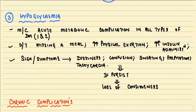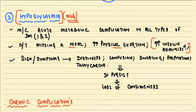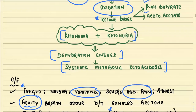Hypoglycemia is the most common acute metabolic complication in all types of diabetes, including type 1 and type 2. It occurs because someone has missed a meal, because of excessive physical exertion, or because of increased insulin administration. Patients will have signs and symptoms like sweating, palpitation, confusion, tachycardia, and dizziness. If it persists, it may lead to loss of consciousness.